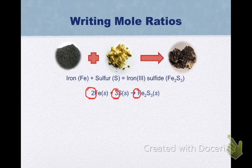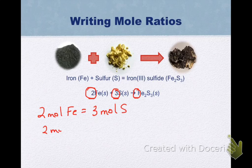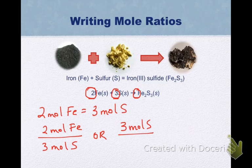I can take a look at this ratio and write them in a wide variety of ways. So I could say that two moles of iron is equal to 3 moles of sulfur in terms of what quantities react together. And whenever we have a relationship between two things, we can write conversion factors. So I can write this as 2 moles of Fe over 3 moles of S or 3 moles of S over 2 moles of Fe.